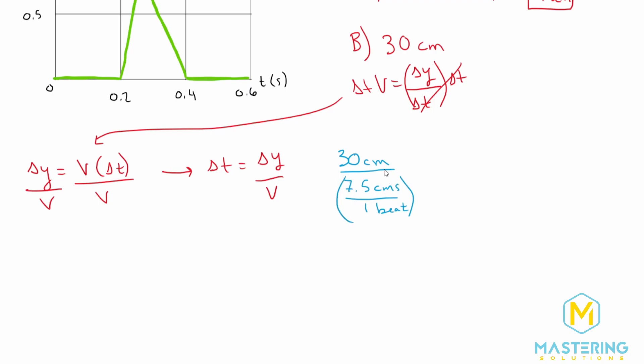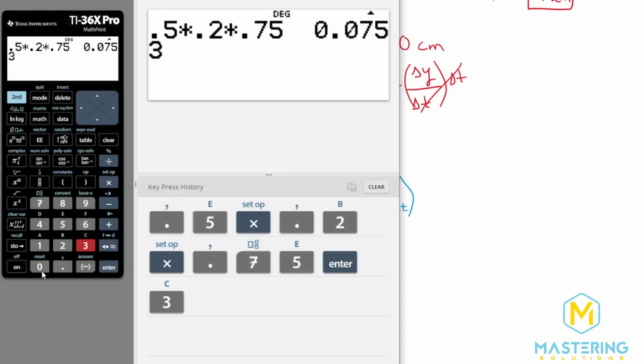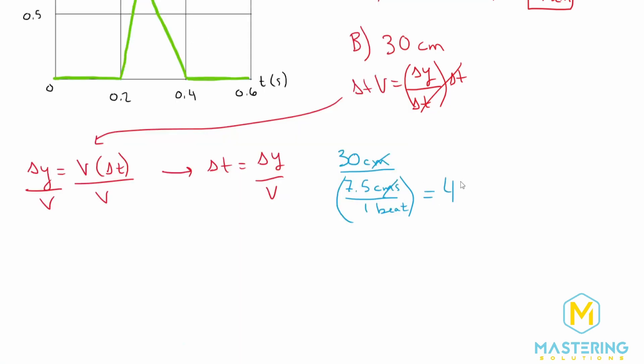And so now whenever we're dividing by a fraction, it's the same as multiplying by the reciprocal. So when we do that, the centimeters will both cancel out and we're left with beats. So we have 30 divided by 7.5, and that gives us 4. So it takes us 4 beats to go from our heart up to our brain.